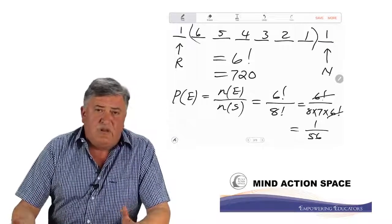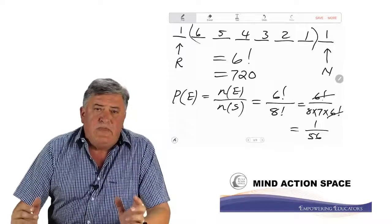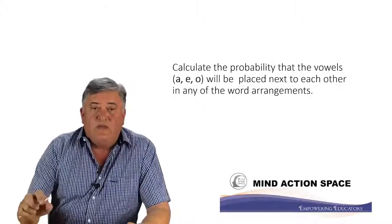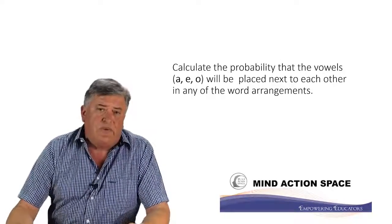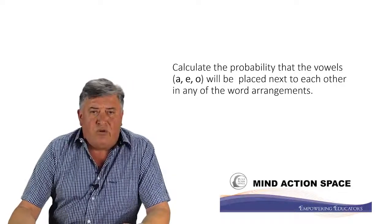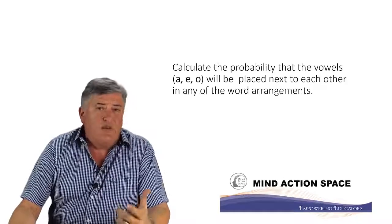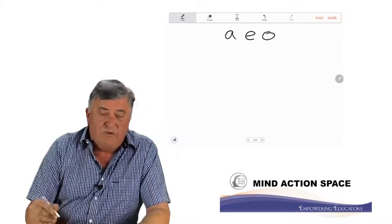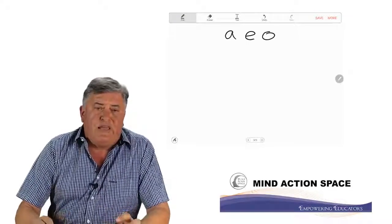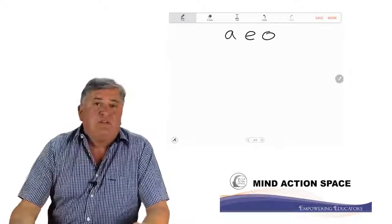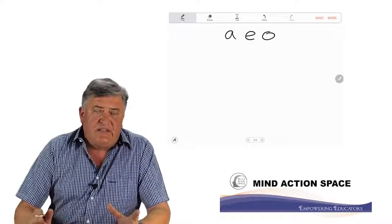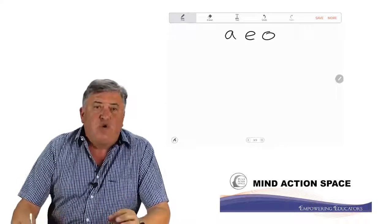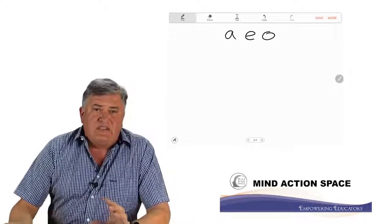If you want to write the answer as a decimal, that is also acceptable. In the third part of this question, they give us a different restriction — what we refer to as a grouping. Calculate the probability that the vowels — and there are three vowels in this particular word: A, E, and O — will be placed next to each other in any of the word arrangements. What you need to understand is that we have a grouping here: the three vowels must be grouped together, and no other letter may be between them.